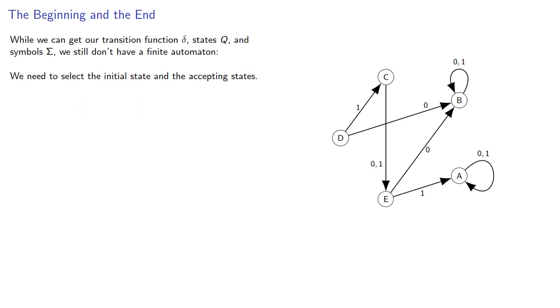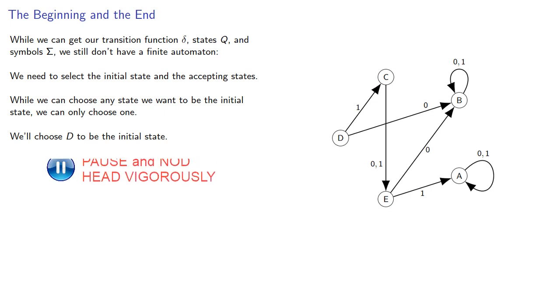While we can choose any state we want to be the initial state, we can choose only one, and so we'll choose D to be the initial state because it's on the left. And to notate that it is the initial state, we'll draw an arrow from the outside to D.